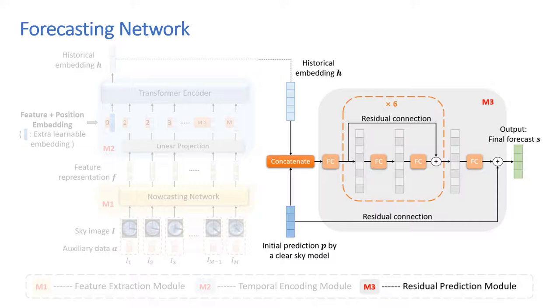At last, in the residual prediction module, instead of predicting the real solar irradiance directly, we use the learned historical embedding to predict the residual solar irradiance with respect to the initial prediction output by a clear sky model.